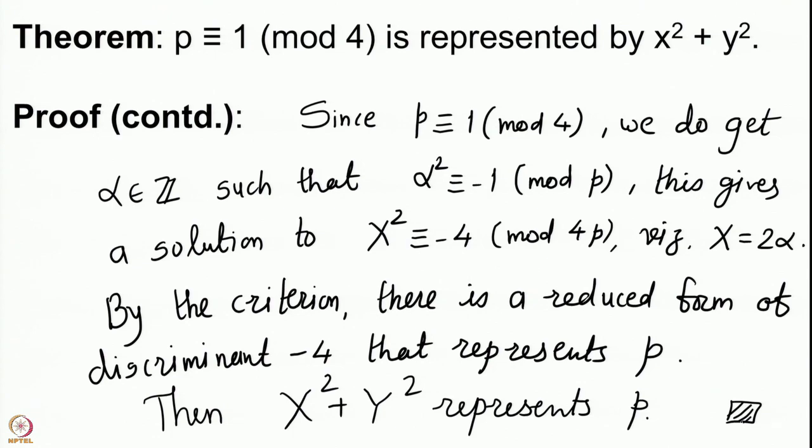Let me recall: any p ≡ 1 mod 4 is represented by x² + y²; 2 is represented by x² + y²; p ≡ 3 mod 4 is not represented by x² + y², but the square of such a prime must divide any integer of the form x² + y² that the prime divides. Using this, in the next lecture we are going to determine the set of all integers which can be written as sums of 2 squares. Very interesting — I will see you then, thank you very much.